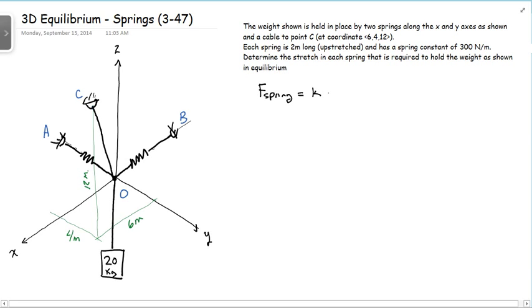equals the spring constant times its stretch or its displacement. So in a typical three-dimensional static problem like this, we're solving for forces. Once we get those forces, we can just apply the spring constant or we can find that the displacement or the stretch in the spring is equal to the force in the spring divided by the spring constant. So that's going to be our approach.